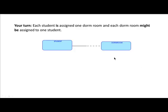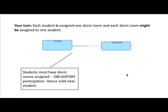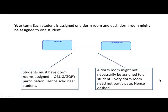The diagram comes out like this: every student is assigned a dorm room, so student has obligatory participation — solid line on the student side. A dorm room might or might not be assigned to a student — dashed line on the dorm room side. It's a one-to-one relationship, so no crow foot. No matter which side you place each entity, the dashed line must be near dorm room and the solid line must be near student.